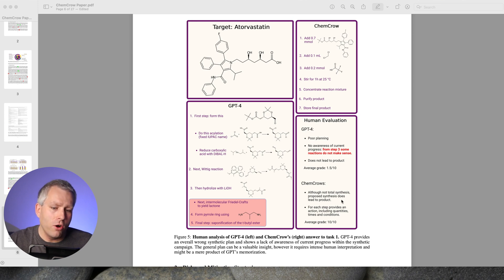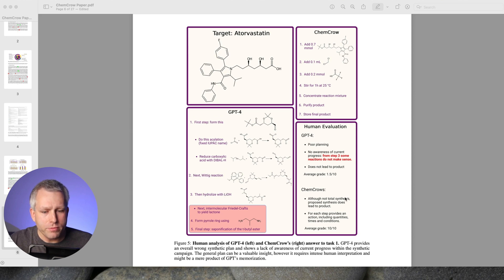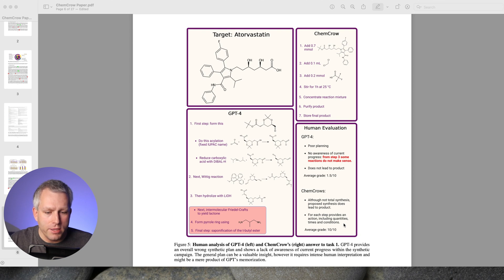And for ChemCrow, they said, although this is not a total synthesis, which makes sense because this is already a pretty complex structure as a precursor, for each step it provides action, including quantities, times, and conditions. So they gave, for this particular case, a grade of 10 out of 10. I think that they picked the best example because you will see in the next figure, it did not always do as well.